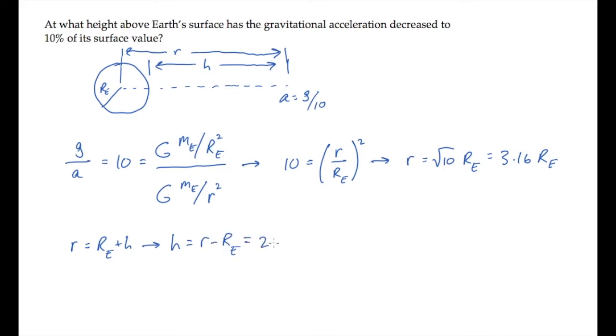So that's 2.16 times Earth's radius. This works out to 1.38 times 10 to the 7 meters, which is almost 14,000 kilometers, or about 8,600 miles above the surface of Earth.